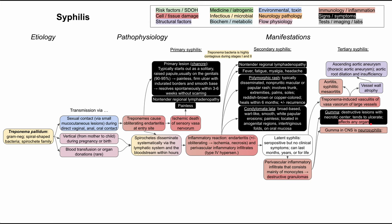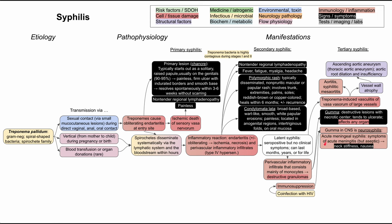When gummas affect the central nervous system, it's called neurosyphilis. Neurosyphilis doesn't arise in everybody — it typically arises in people who have immunosuppression. A common case is when a patient has a co-infection with HIV, for instance. Since both are sexually transmitted diseases, if you have HIV and syphilis you might be more at risk for neurosyphilis.